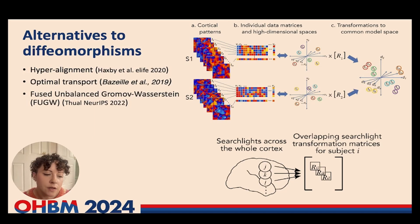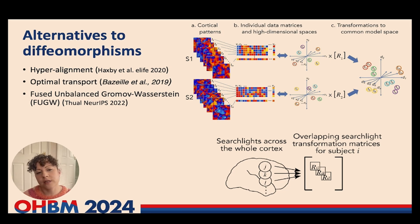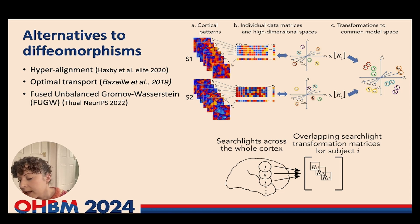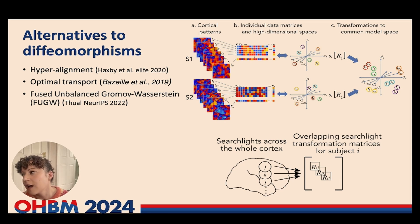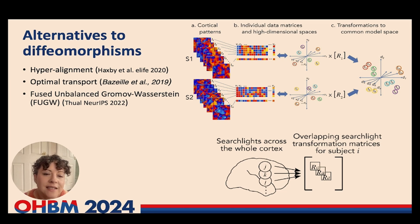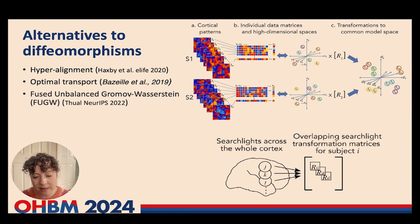There are other approaches to functional alignment which completely drop diffeomorphic constraints. For example, probably the most widely known is the hyperalignment approaches that have come out of the Haxby lab. These are matching vertices based on the similarity of the dynamics of the fMRI time series. While I see great value in the direction of these methods, in my opinion, at this stage, removing all biophysically informed constraints can lead to artefacts driven by the physiological noise that remains in the data.